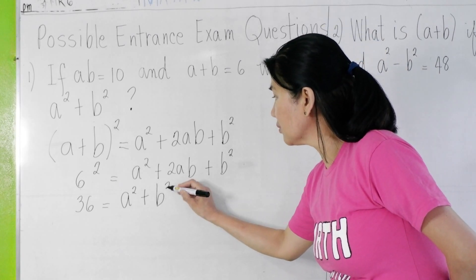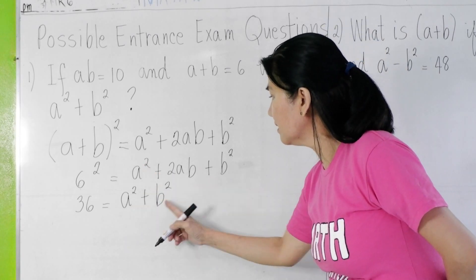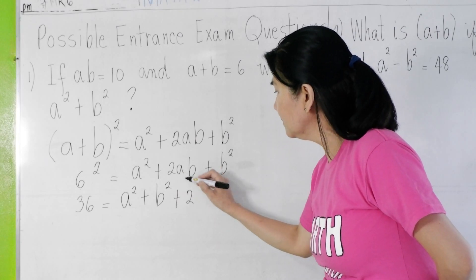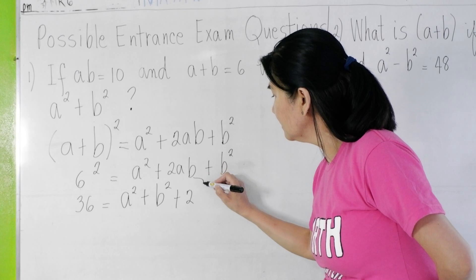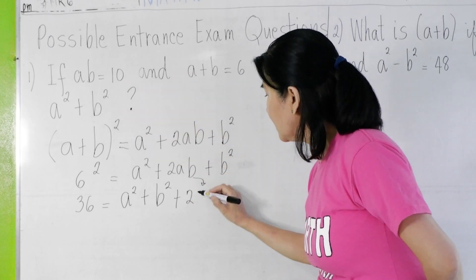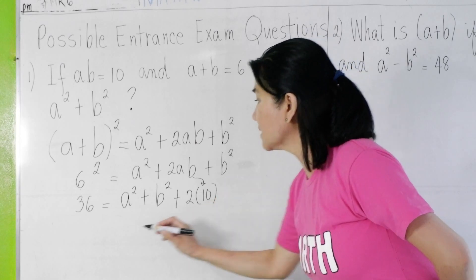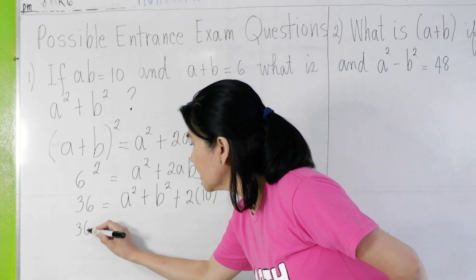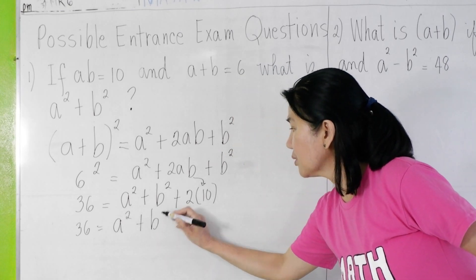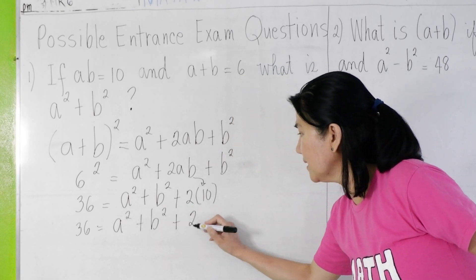So A squared plus B squared, I'm just rewriting it here, and then plus 2AB. AB in the given is 10, so 2 times 10, that will give us 20. So 36 equals A squared plus B squared plus 20.